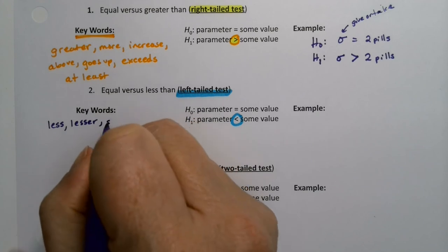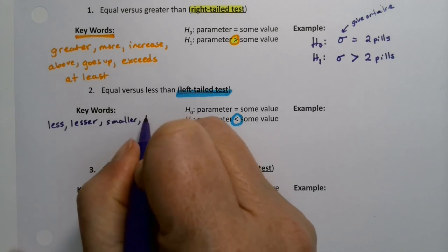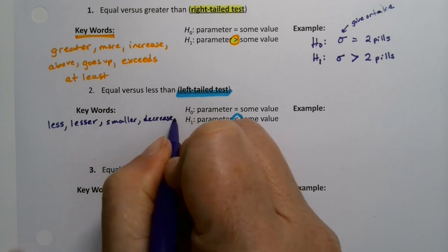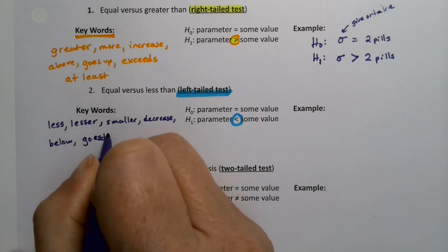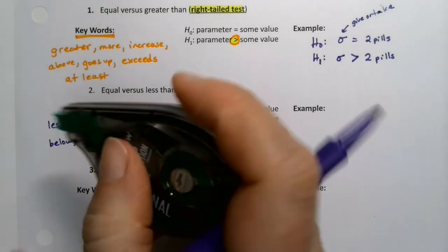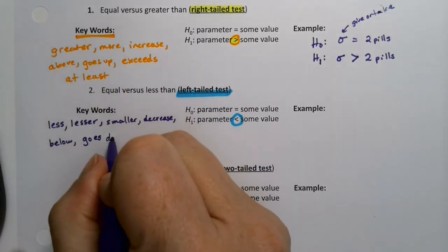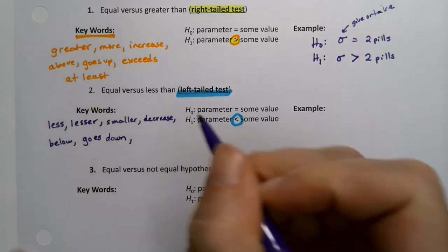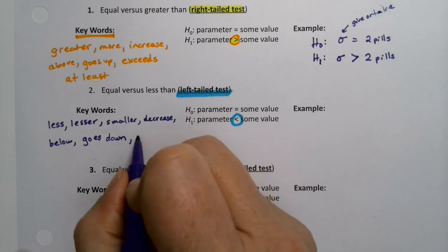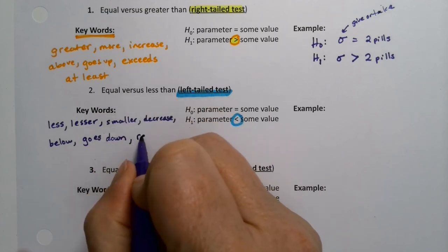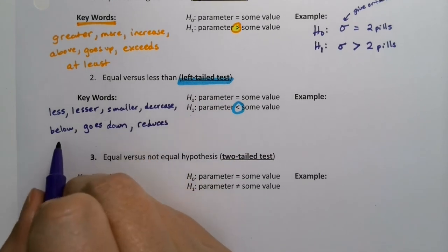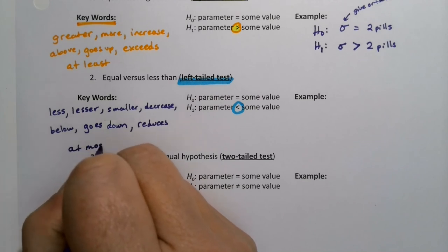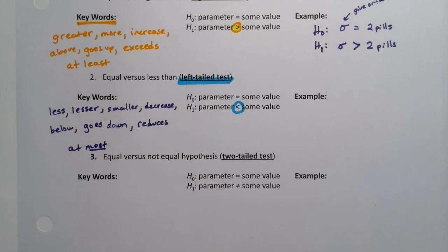Keywords for less than include: lower, smaller, decrease, below, goes down, reduces, and at most. At most three students did this means three or less. You can add to this list as well.